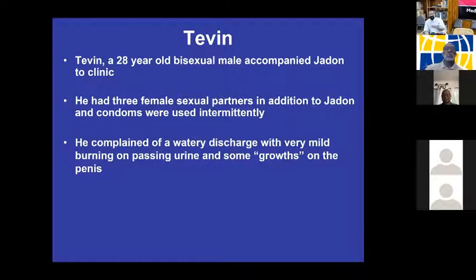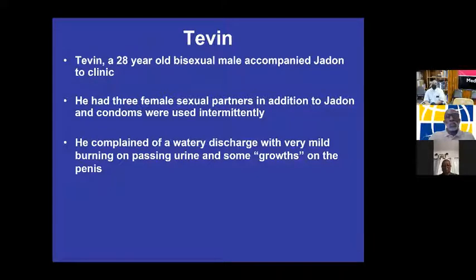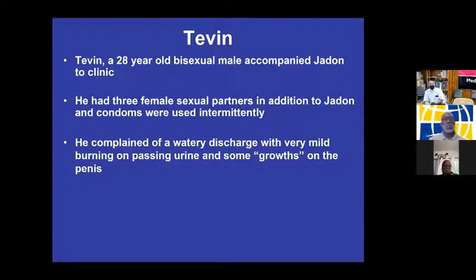So Tevin — Jaden's partner, who accompanied him to the clinic — is a 28-year-old bisexual male. He had three female sexual partners in addition to Jaden and only used condoms intermittently. He said he was HIV-negative. Tevin complained of watery discharge with very mild burning on passing urine and some growths on the penis.